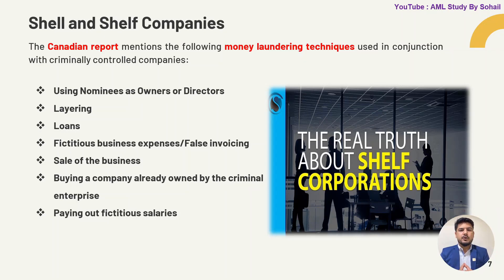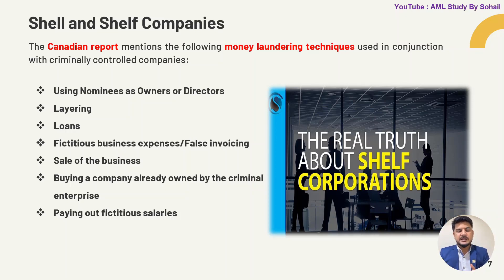The Canadian report mentioned the following money laundering techniques used in conjunction with criminally controlled companies: using nominees as owners or directors. The reason they use nominee persons is they don't want to reveal who is behind the company. They can register more than one company, and these can be layered with other companies — they can transfer funds from one company to another.